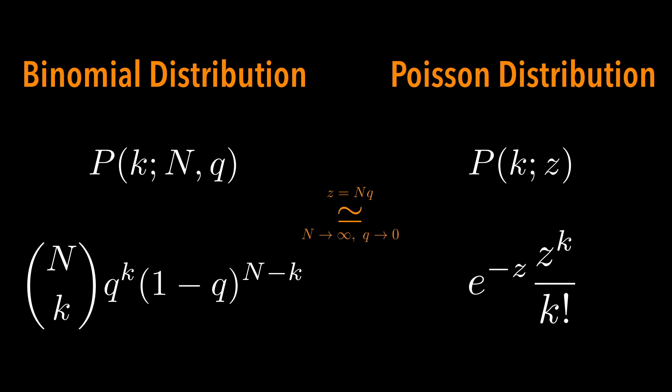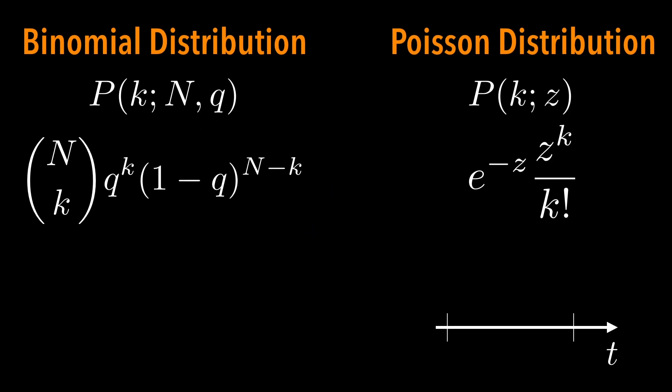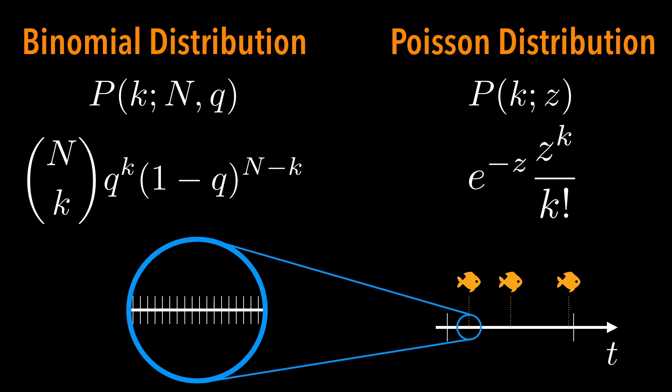So this makes sense because counting the number of events within an interval is like slicing the interval into really tiny mini intervals and then seeing whether the event occurs or not in each mini time interval. That's like doing many coin tosses.